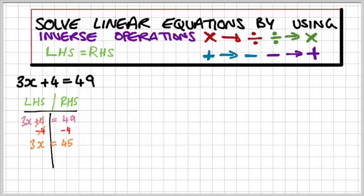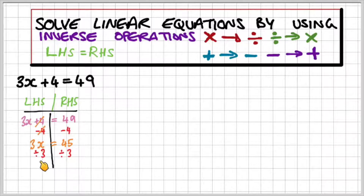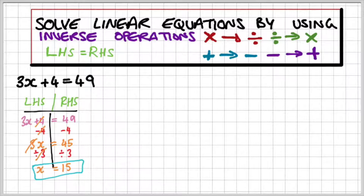Now we can get rid of the 3. Because the 3 is a multiplication, we need to divide by 3 on both sides — the inverse of multiplication is division. When we tidy that up, 3 divided by 3 gives us x on its own, and 45 divided by 3 gives us 15.